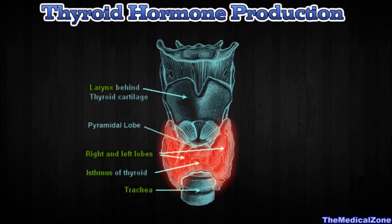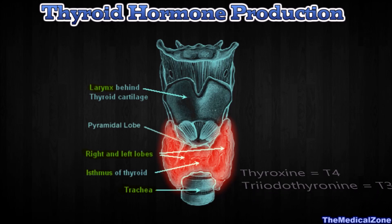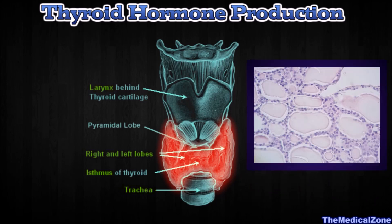This gland secretes hormones that govern many of the metabolic and growth functions in your body. The hormones are called thyroxine and triiodothyronine, commonly called T4 and T3 respectively. Inside the thyroid gland, follicle structures can be found.